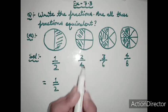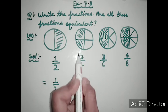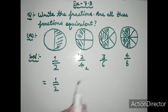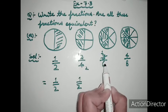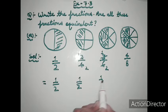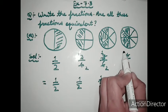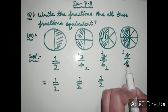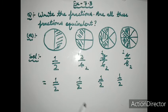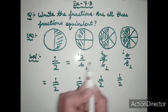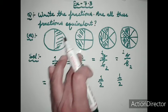Reducing each fraction: 2 upon 4 gives 1 upon 2; 3 upon 6 gives 1 upon 2; 4 upon 8 gives 1 upon 2. Since all fractions have the same value of 1 upon 2, we say that all these fractions are equivalent.